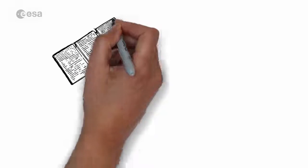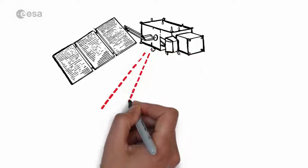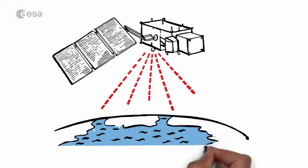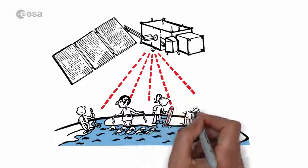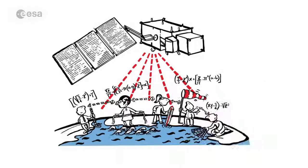Sentinel-3 will, for the first time, provide almost daily coverage of all surface water on a global scale, with information about its levels, movement, temperature, the wind speeds and the water color.